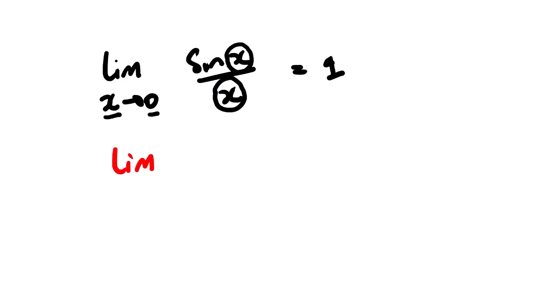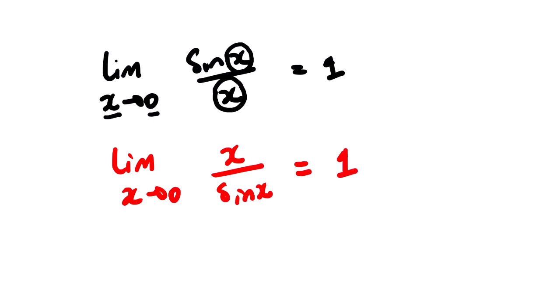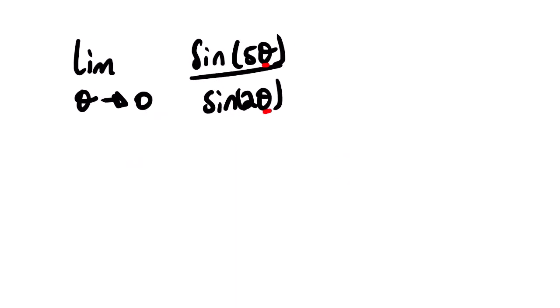We also have the reciprocal of this identity, which is also equal to one. So what we need to do is try to form that identity from our given function.